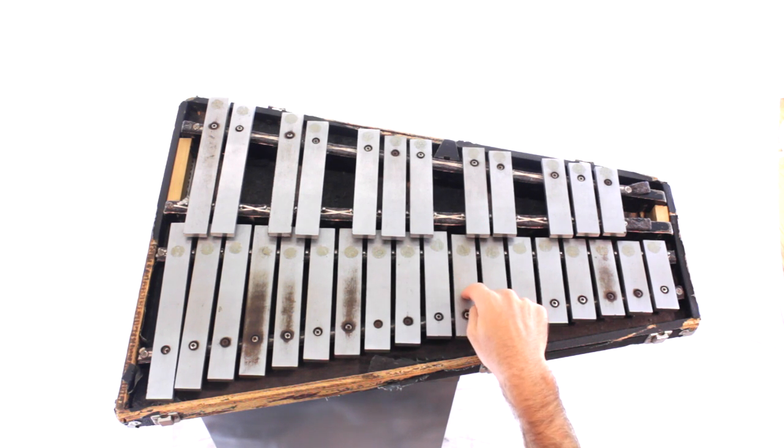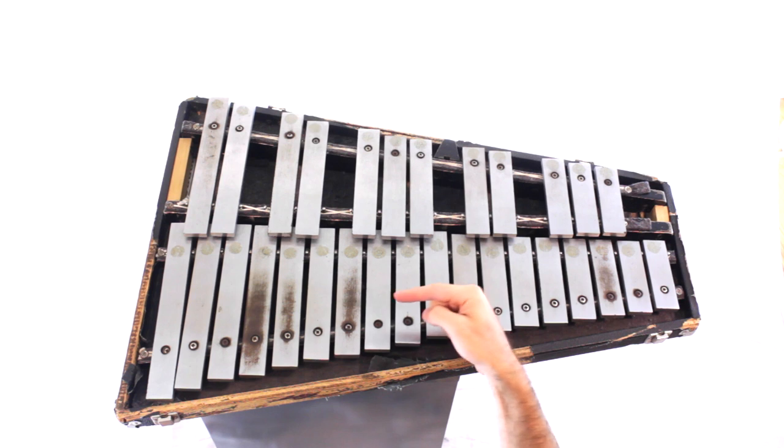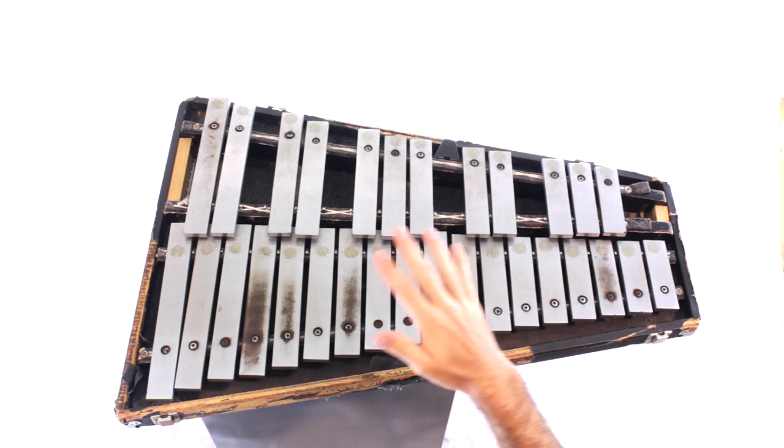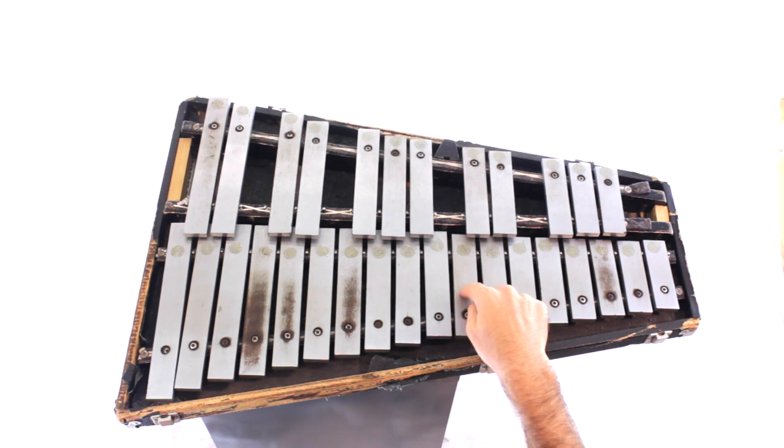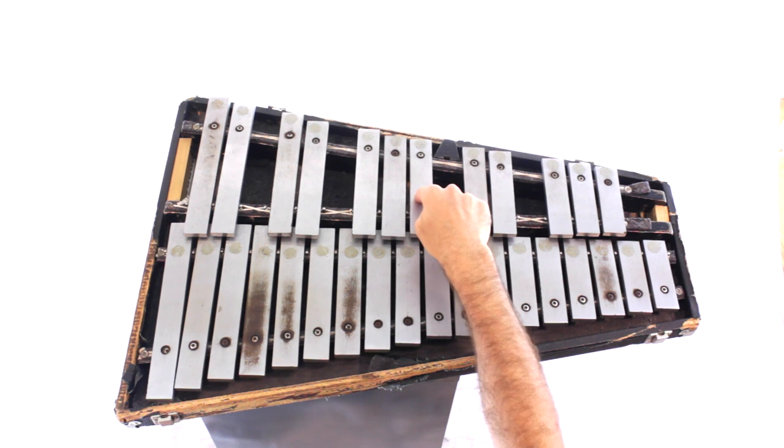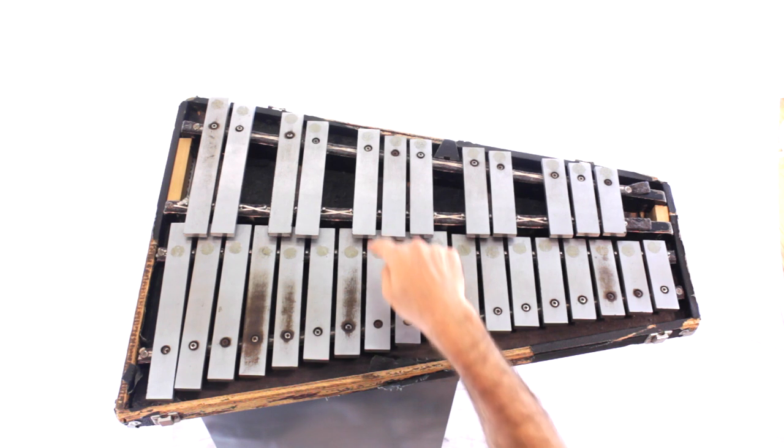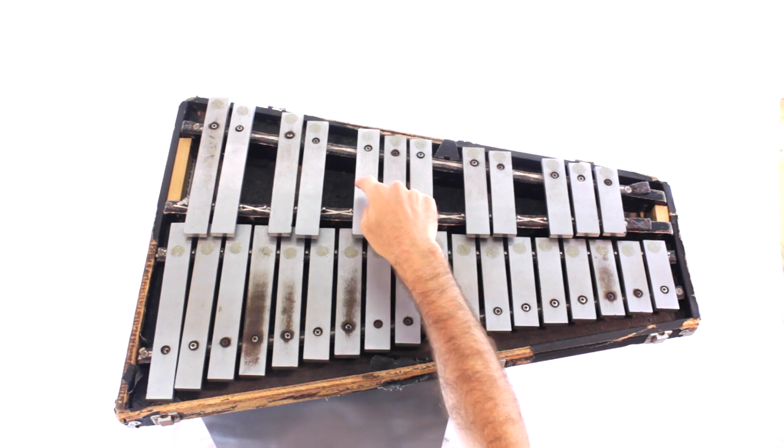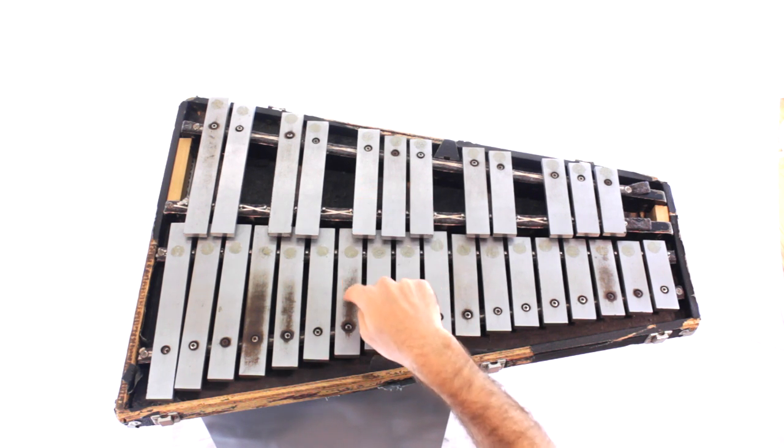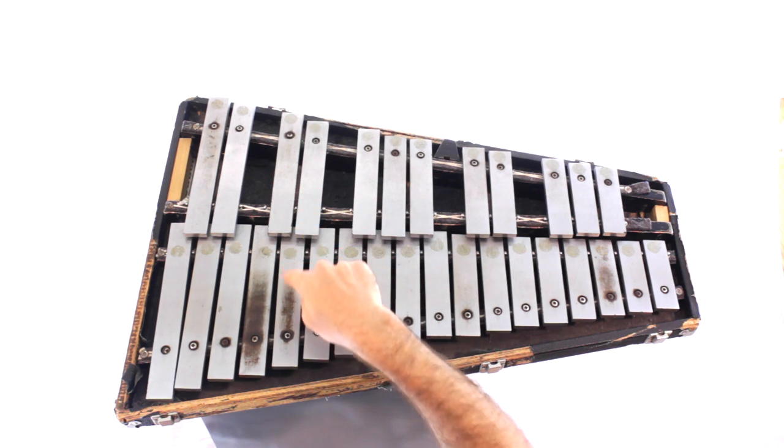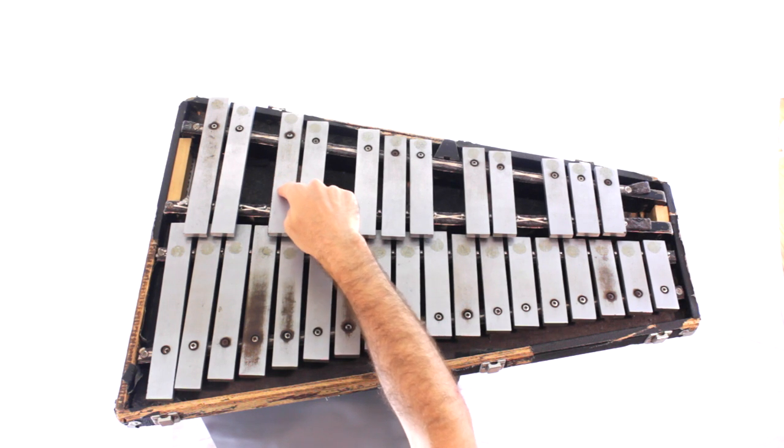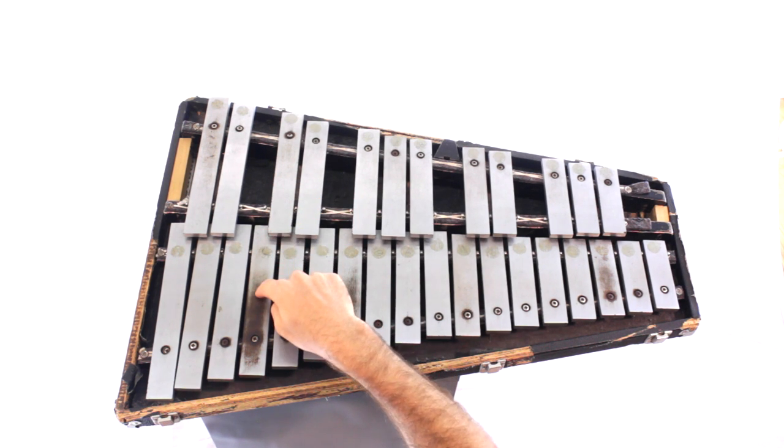Now start here and go down, go backwards. And remember, going down, we're going to use flats. Go. C, B, B flat, A, A flat, G, G flat, F, E, E flat, D, D flat. And C.